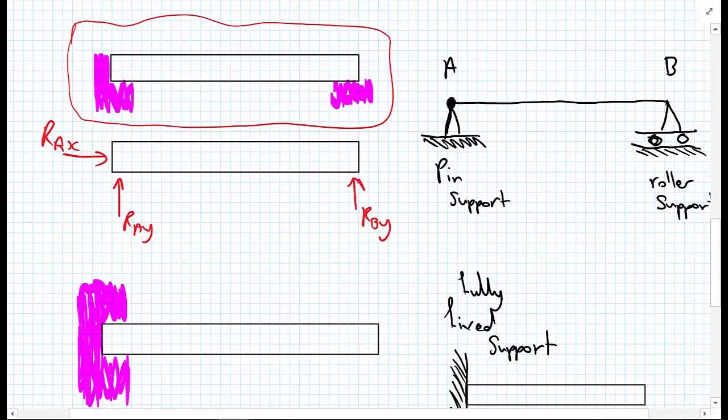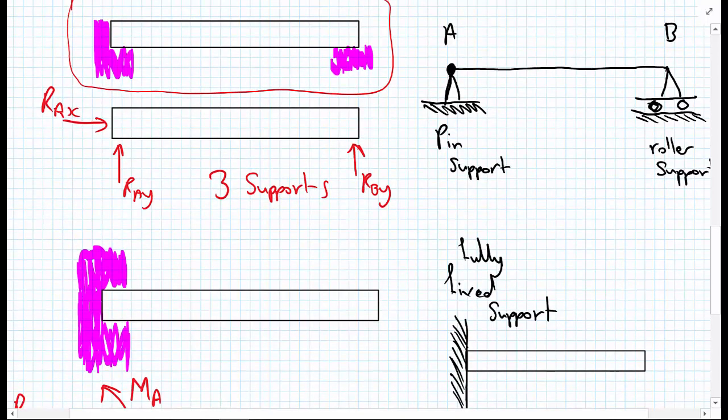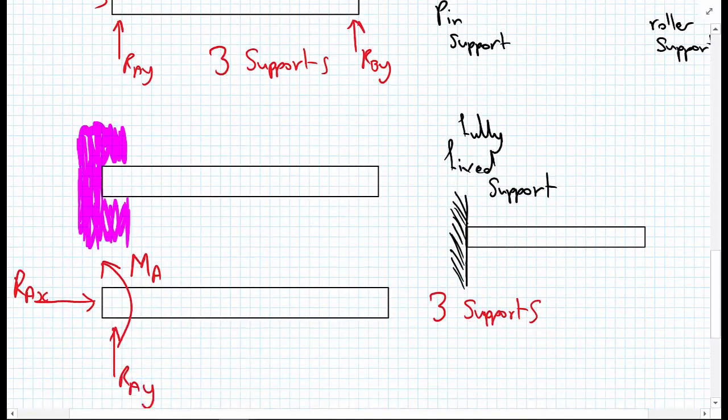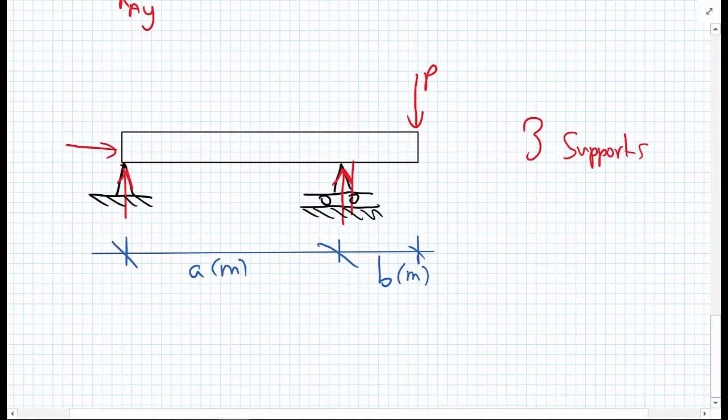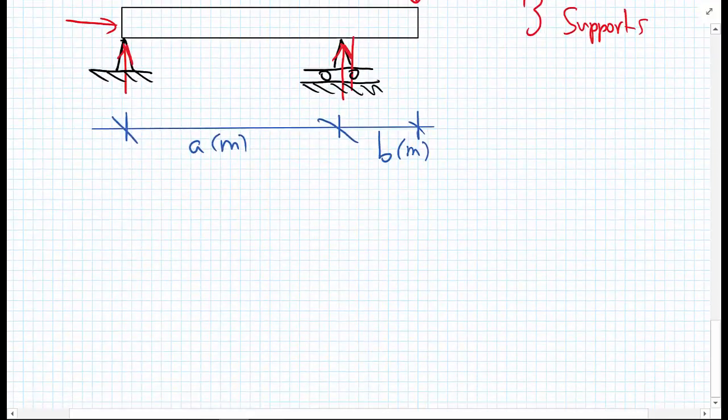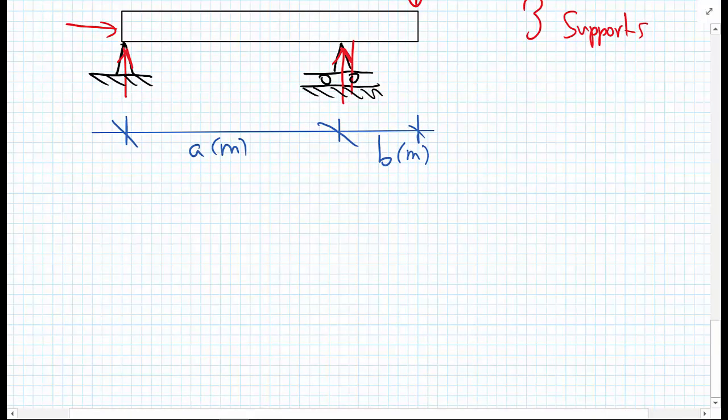Finally we had our simply supported beam with a pin at one end and a roller at another, and again giving us three supports. This is no coincidence. If we have less than three supports, the body will be able to move in some manner, whether it can translate in the y direction or the x direction, or it would rotate if you didn't have at least three supports.